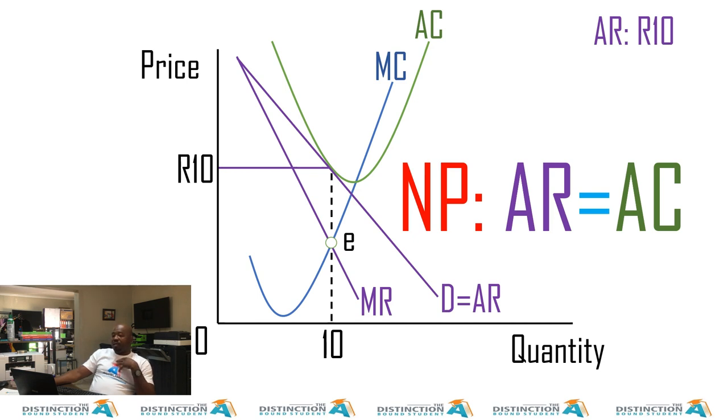But before we get to the end, we just need to prove. We want to prove that this firm is making what, a normal profit. So we simply say AR minus AC. And if we say AR minus AC, we see that it's 10 minus 10. And so 10 minus 10 gives us a zero. So zero is nothing but a normal profit.